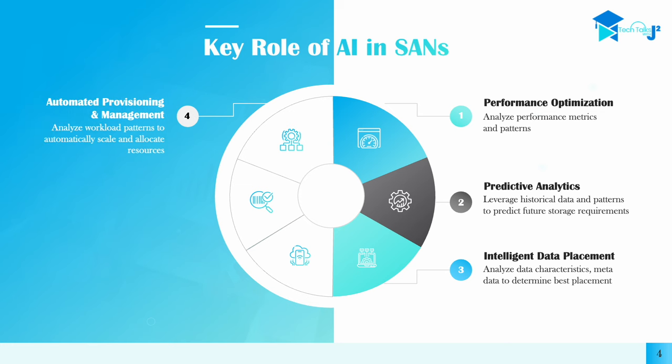Number four is automated provisioning and management. AI can analyze workload patterns to automatically scale and allocate resources. Storage admins may wonder about AI doing automated provisioning, since a lot of what they do is provisioning storage out of the single pool to servers on the SAN. But if you can automate some of that, it's going to save so much time. AI may retire some job duties, but there will also be other opportunities because the automation still needs to be set up and managed. Automating provisioning of storage to servers will save time and free up resources to do other things in the environment.